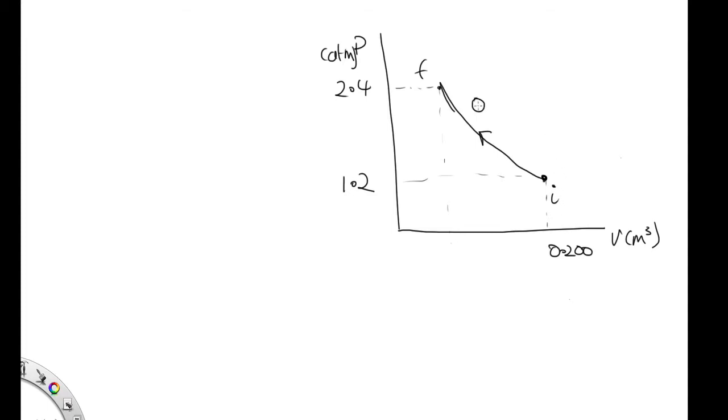We are told that it's adiabatic, which means that Q is equal to 0. We're also told that it's diatomic and that the particles are rotating but not vibrating, which tells us F is equal to 5, the three translational degrees of freedom plus the two rotational ones.